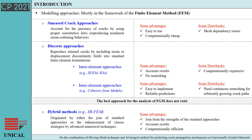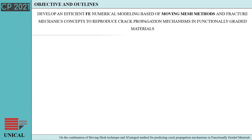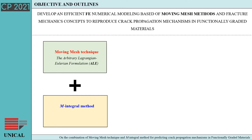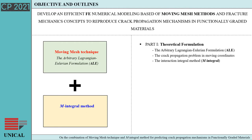The idea of joining different methods or enhancing standard approaches by innovative numerical techniques represents an exciting opportunity to develop new numerical procedures able to predict a randomly growing crack with reduced computational cost. In this work, we present an efficient finite element numerical modeling approach which combines moving mesh methodology and fracture mechanics concepts to predict crack propagation phenomena in functionally graded materials. The moving mesh method, based on the arbitrary Lagrangian-Eulerian formulation, is adopted to properly describe the evolution of discontinuities within the computational domain. The M-integral method is employed to accurately evaluate the stress intensity factors of the crack problem, which are essential to define crack nucleation conditions and the direction of propagation.